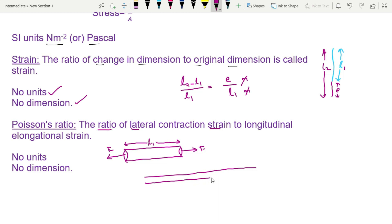Length increases. But cross section, lateral dimension decreases. Diameter decreases. Length increases from L1 to L2. When force F is applied, length increases but thickness decreases. Lateral contraction - thickness decreases. But in this direction, length increases - longitudinal elongation. This is Poisson's ratio.